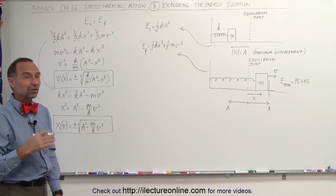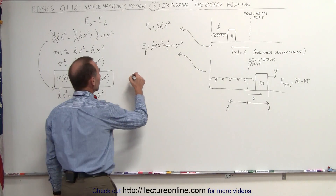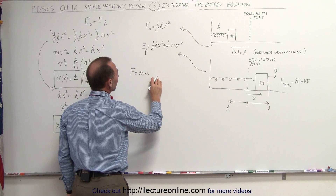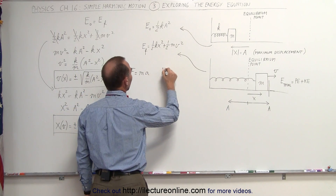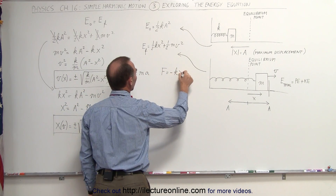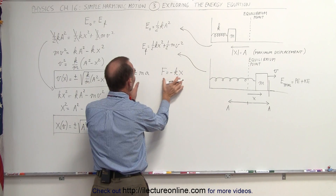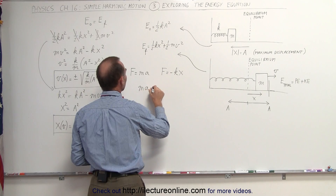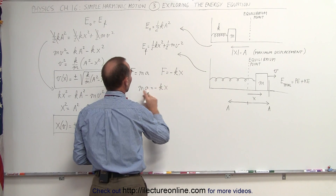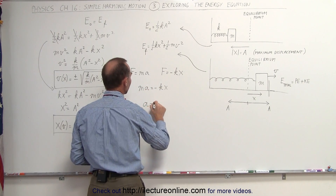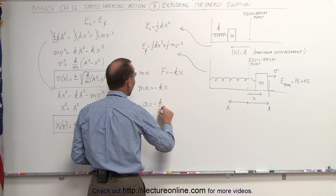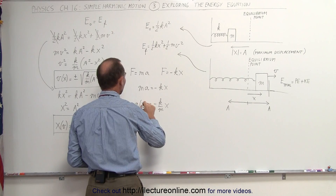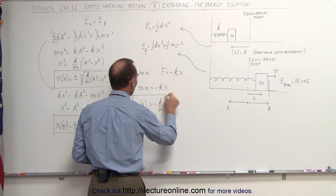The third equation — acceleration as a function of position — can be found by taking Newton's second law, F equals ma, and the equation F equals negative kx, also known as Hooke's law, and setting those two equations equal to each other. That means m times a equals negative k times x. Dividing both sides by m gives a equals negative k over m times x, so a is now also a function of position.